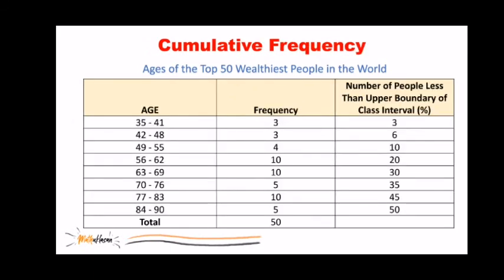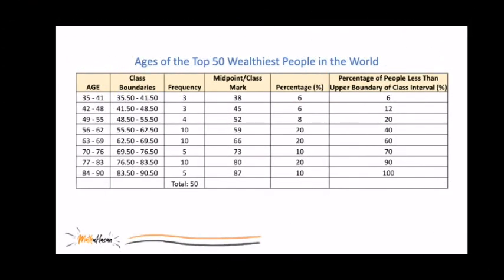We also have what we call cumulative frequency, wherein instead of using percentage, we use the frequency for the column. There are also other variations of cumulative percentage and frequency. Sometimes, instead of using 3, they start with 0 to show the values or percentage below 35. And sometimes, instead of starting with 3, we could start with 10 at the bottom. Depending on your objectives, you can show all the possible distributions in one table like this.